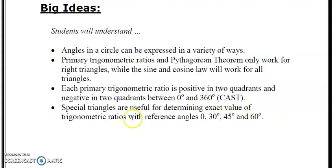Special triangles are used for determining exact values of trigonometric ratios with reference angles 0, 30, 45, and 60 degrees. So we'll touch on these a little bit. We'll continue on in Pre-Calc 11 and continue on in Pre-Calc 12 as well.